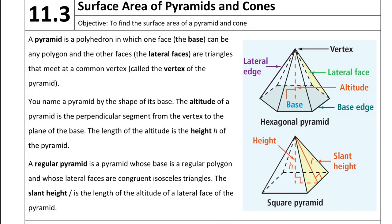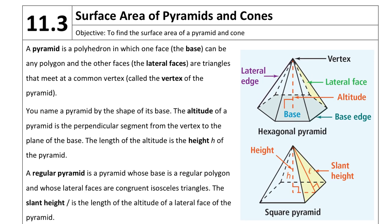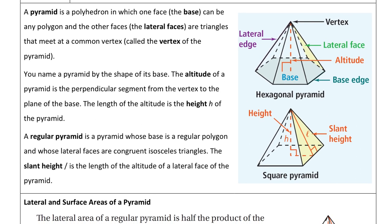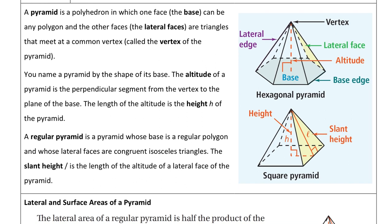For this lesson we're going to talk about surface area of pyramids and cones. Last lesson we talked about prisms and cylinders; this lesson we focus exclusively on pyramids and cones. A pyramid is named by its base, it has lateral faces that are triangles, and those triangles meet at a vertex at the top of the pyramid.